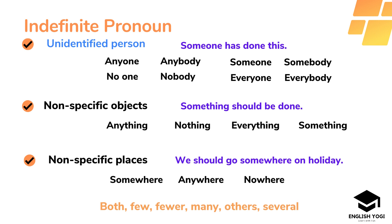The next one is indefinite pronoun. We use indefinite pronouns to give an idea about an unidentified person. Examples include: anyone, anybody, someone, somebody, no one, nobody, everyone and everybody. Whenever we use this type of pronoun, we don't get a specific idea because the person mentioned is completely unidentified. For example: 'Someone has done this' — we don't know who has done this. Indefinite pronouns are also used to show non-specific objects, for example: 'Something should be done.' Non-specific objects can be expressed using: anything, nothing, everything and something.